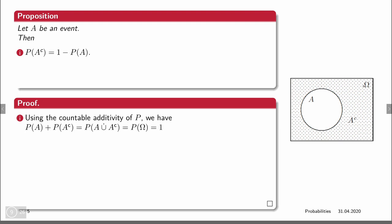If A is an event, then the probability of the complement equals 1 minus the probability of A. This can be easily seen from a figure: A and its complement are disjoint, the probability of their union equals the sum of the individual probabilities, and their union equals omega, whose probability is 1. So the sum of P(A) and P(A complement) is 1, which gives us our proposition.